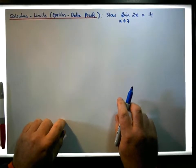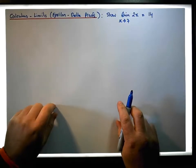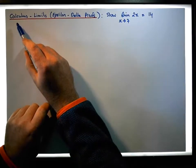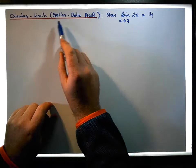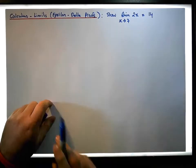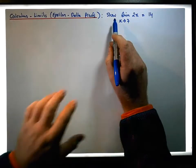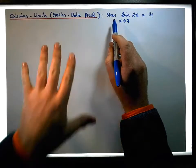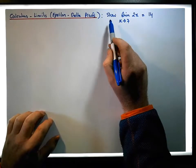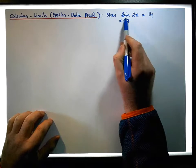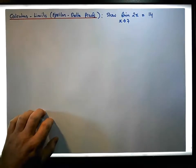Hi guys, this is Jonathan Lambert with Maths and Stats. In this video — another video in our series about calculus and limits, and in particular epsilon-delta proofs — we want to show, using the epsilon-delta definition of a limit, that the limit of 2x as x tends to 7 is in fact equal to 14.